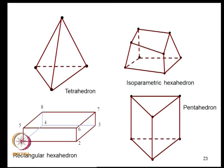In 3-dimensional continuum problems, various element shapes become possible. Whereas line elements had no such choice, plane problems had rectangles, triangles, and quadrilaterals including isoparametric curved-edge variants. For 3D solid elements, we can use tetrahedrons, rectangular hexahedrons, pentahedrons, or general isoparametric hexahedrons. We will develop the logic for structural matrices for at least some of these elements.